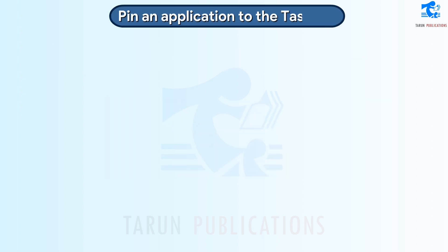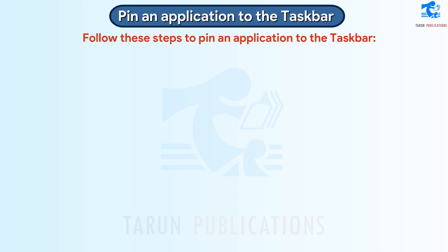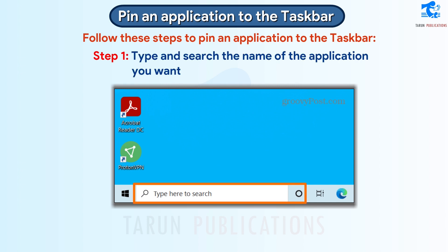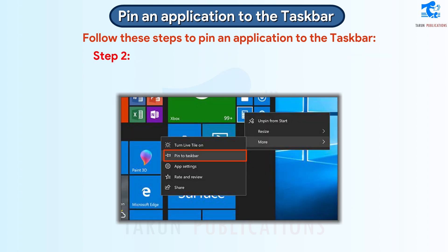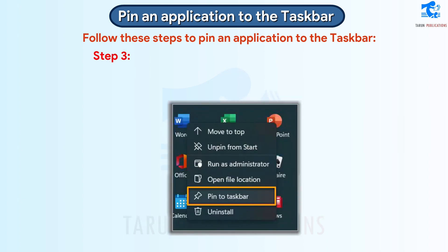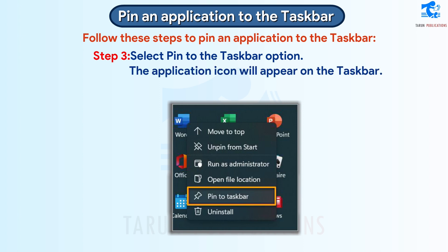Pin an Application to the Taskbar. Follow these steps to pin an application to the Taskbar. Step 1: Type and search the name of the application you want to pin from the search box. Step 2: Right-click on the application name in the search results. A menu will appear. Step 3: Select Pin to the Taskbar option. The application icon will appear on the taskbar.